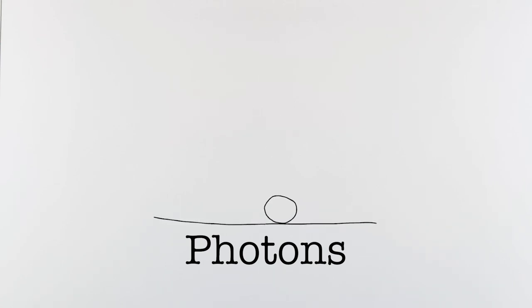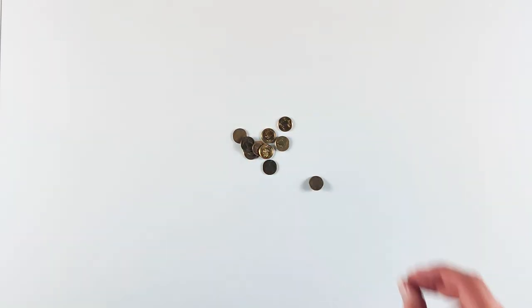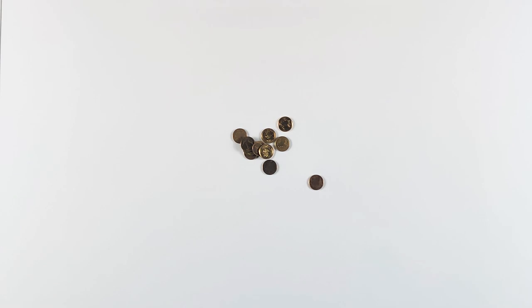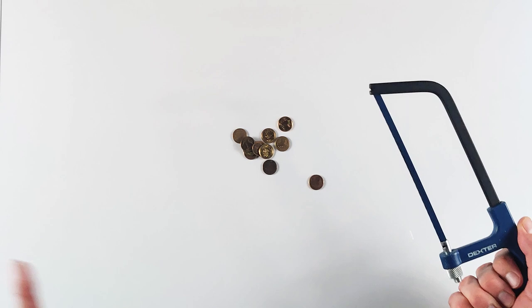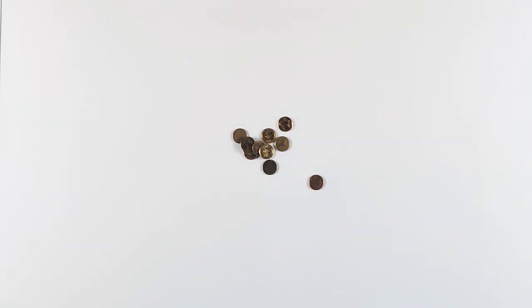A good example that will help us understand it is money. The smallest portion of money is a cent. It is indivisible, we can't pay half or quarter of a cent. In the same way, photon is the smallest portion of energy of an electromagnetic wave.